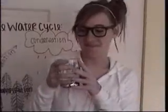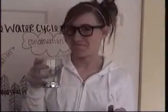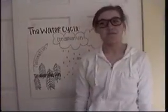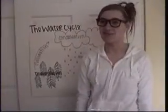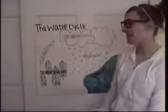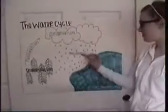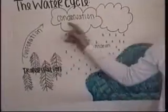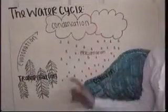This water may have been the water the dinosaurs drank. The water cycle has four parts to it: precipitation, collection, evaporation, and condensation.